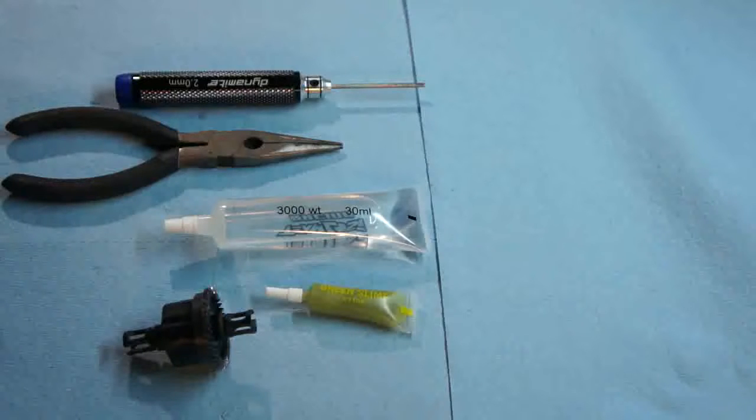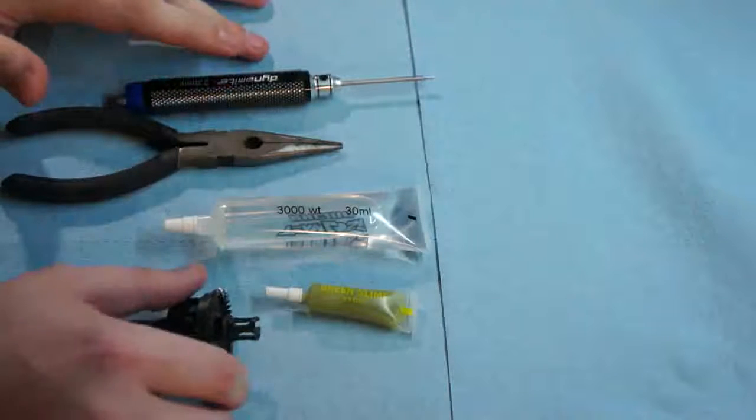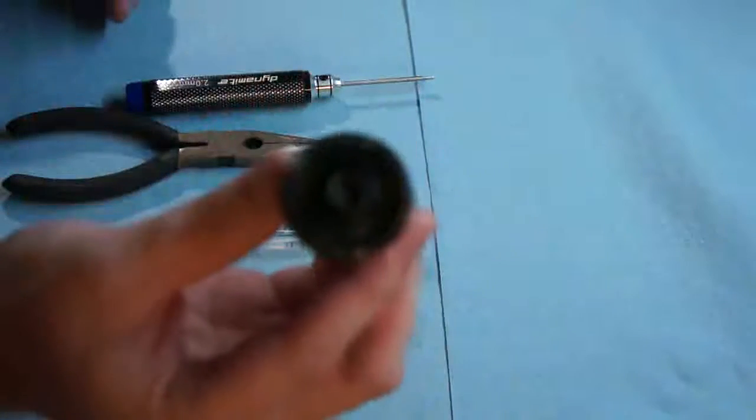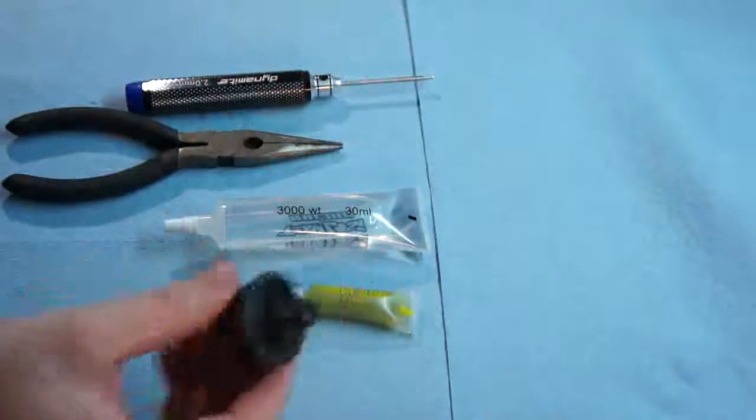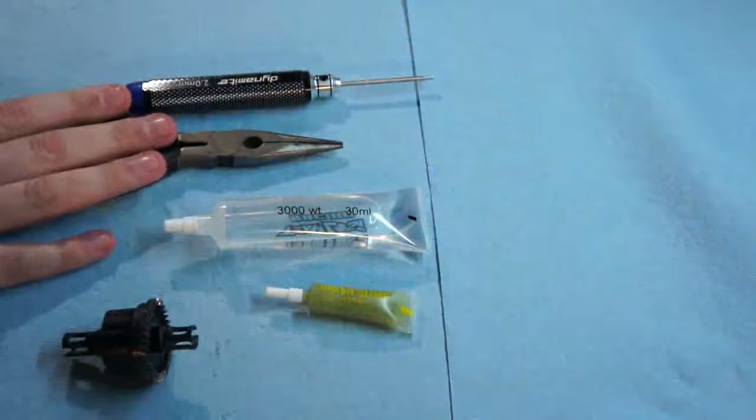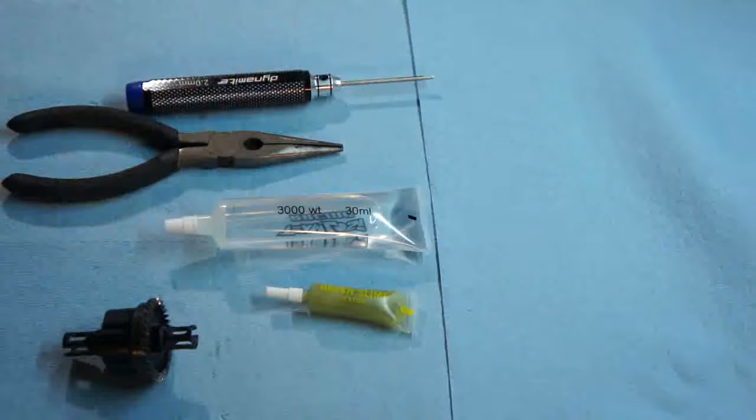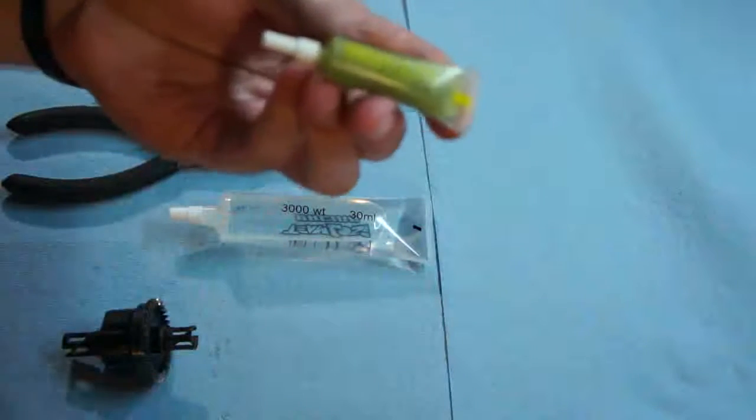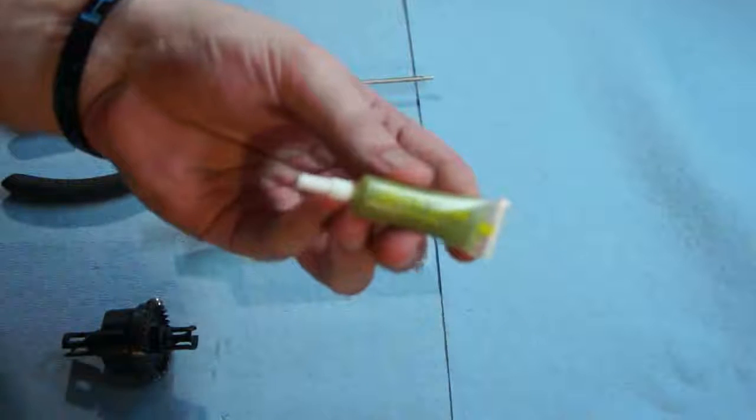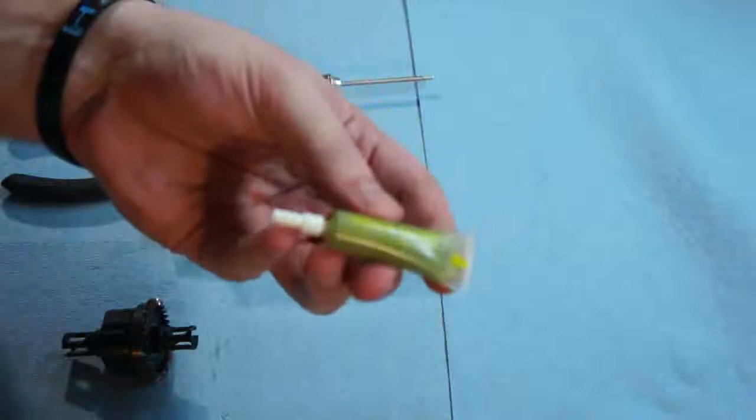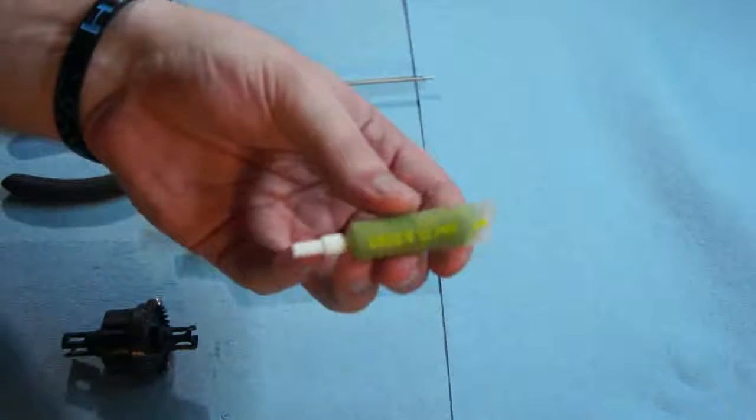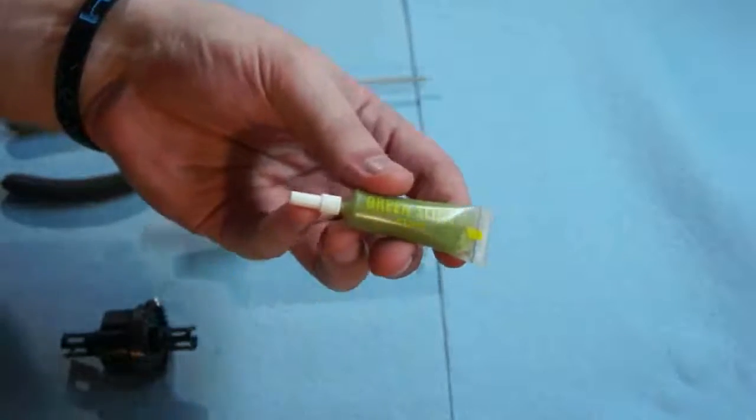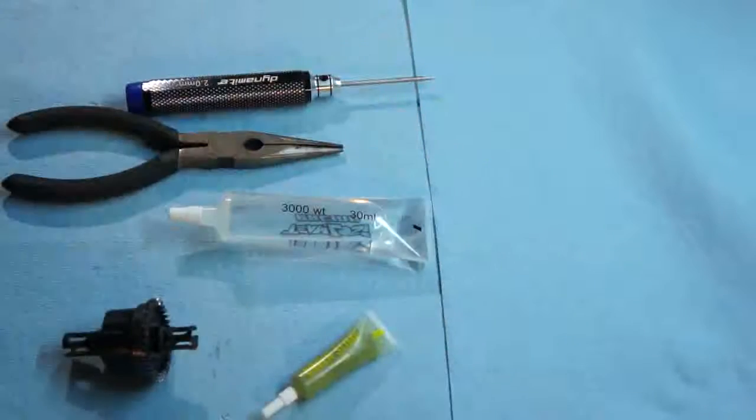I've pulled the diff out of the truck and have all the equipment and tools laid out. I've got the hex wrench for pulling screws out of the top of the diff, needle nose pliers to get the spider gears out, diff oil, and Associated green slime. This is a sealant I like to put on the O-rings to help keep the oil from leaking out. Let's get started.